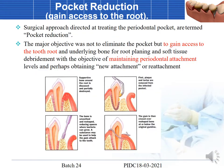Pocket reduction, on the other hand, is a procedure directed at treating the periodontal pocket directly. The major objective is not to eliminate the pocket but to gain access to the tooth root and underlying bone for root planing and soft tissue debridement, with the objective of maintaining periodontal attachment level and perhaps obtaining new attachment or reattachment. Flap surgery is done to remove root deposits and gain access to the root surface.